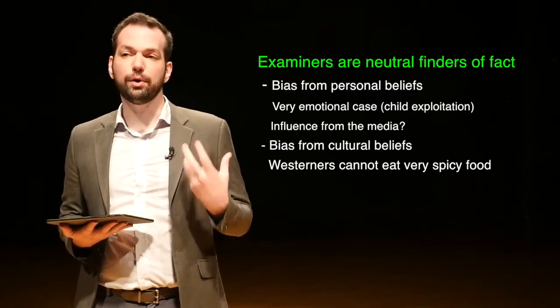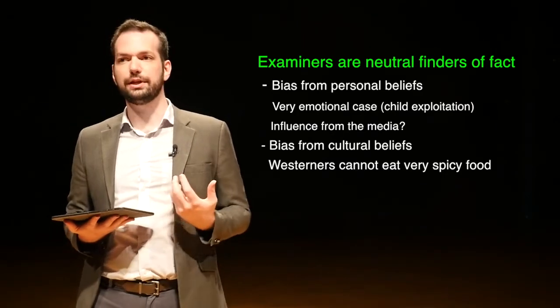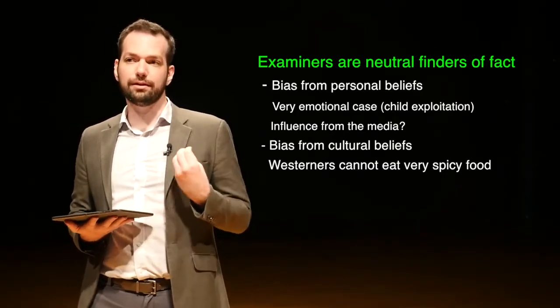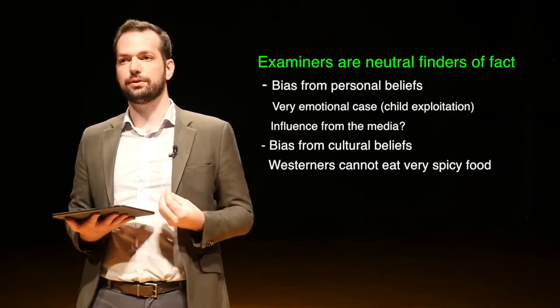In very emotional cases — for example, child exploitation cases — you might see a lot of really bad things on the suspect's computer, and that will make you want to blame someone. The obvious choice to blame is the suspect, even if they didn't necessarily do it. Because of your emotional state, you might look for evidence that makes the suspect guilty when they're actually not.